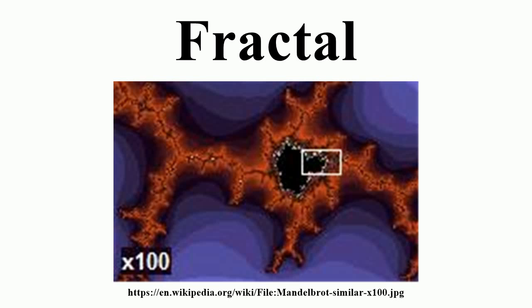Brownian motion: a path generated by a one-dimensional Wiener process is a fractal curve of dimension 1.5, and Brownian motion is a finite version of this. Common techniques for generating fractals: images of fractals can be created by fractal-generating programs. Iterated function systems use fixed geometric replacement rules; may be stochastic or deterministic, e.g. Koch snowflake, Cantor set.